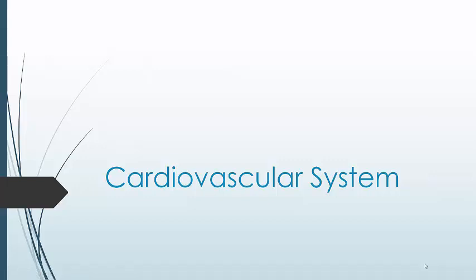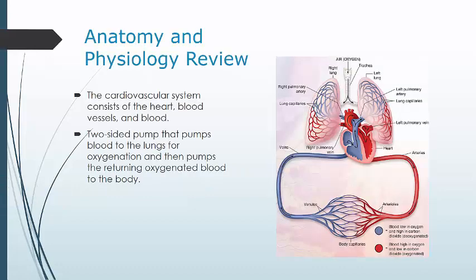We'll be going over the cardiovascular system. The cardiovascular system is a closed system that consists of the heart, the blood vessels, and the blood. Closed means what's in there should stay in there and what's not in there should stay out. It's a two-sided pump that functions as one pump, delivering blood to the lungs for oxygenation and then returning back to the left side to pump out to systemic circulation.